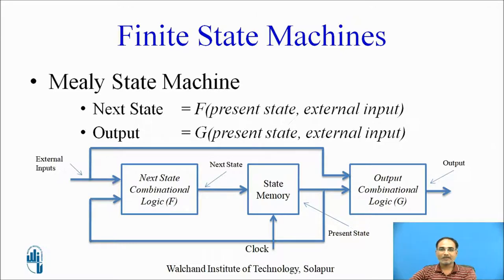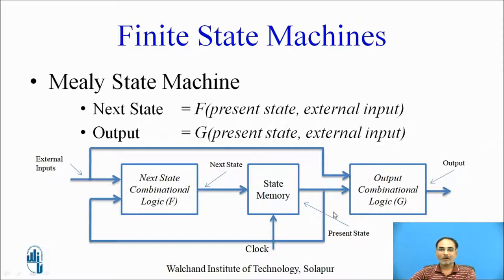Next is the Mealy state machine. In Mealy state machines, the next state excitation inputs depend on external inputs as well as the present state. The output of a Mealy state machine depends on both the present state and the external inputs. In contrast, in a Moore state machine the output only depends on the present state. That is the key difference between these two state machines.